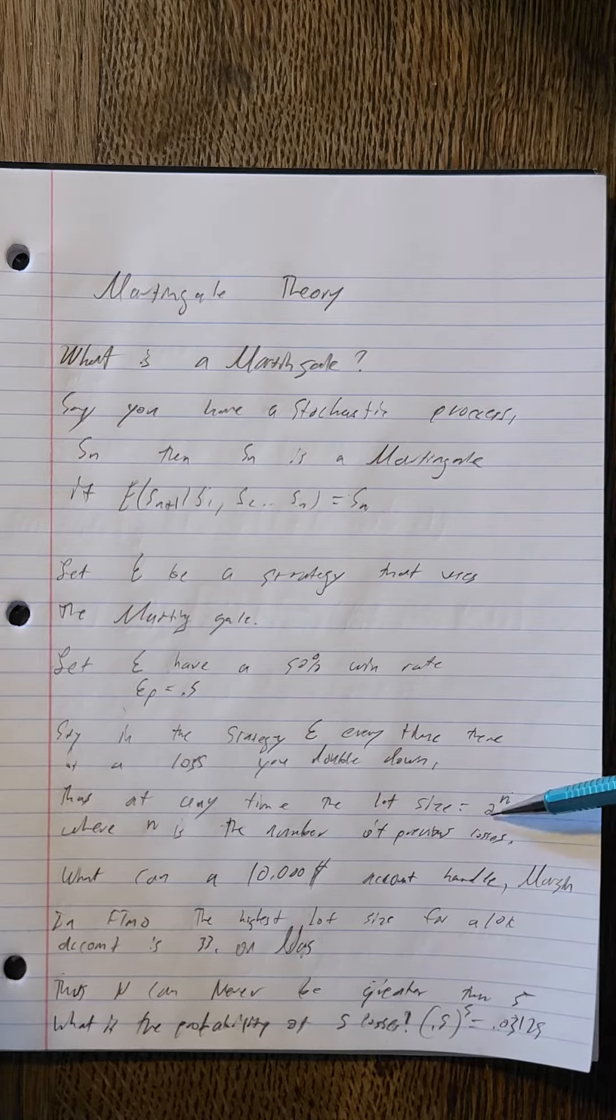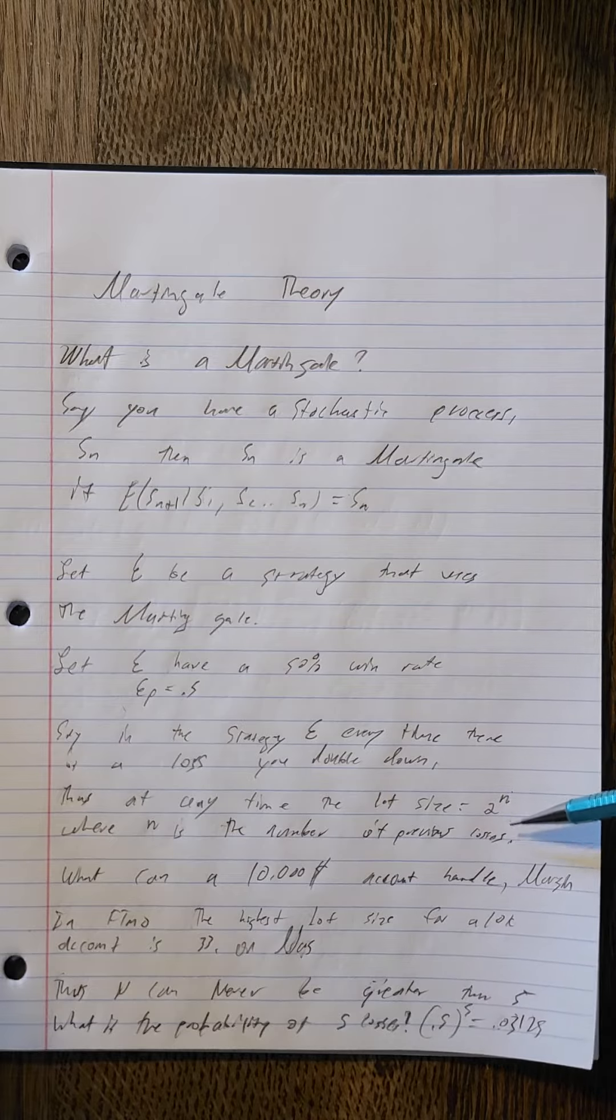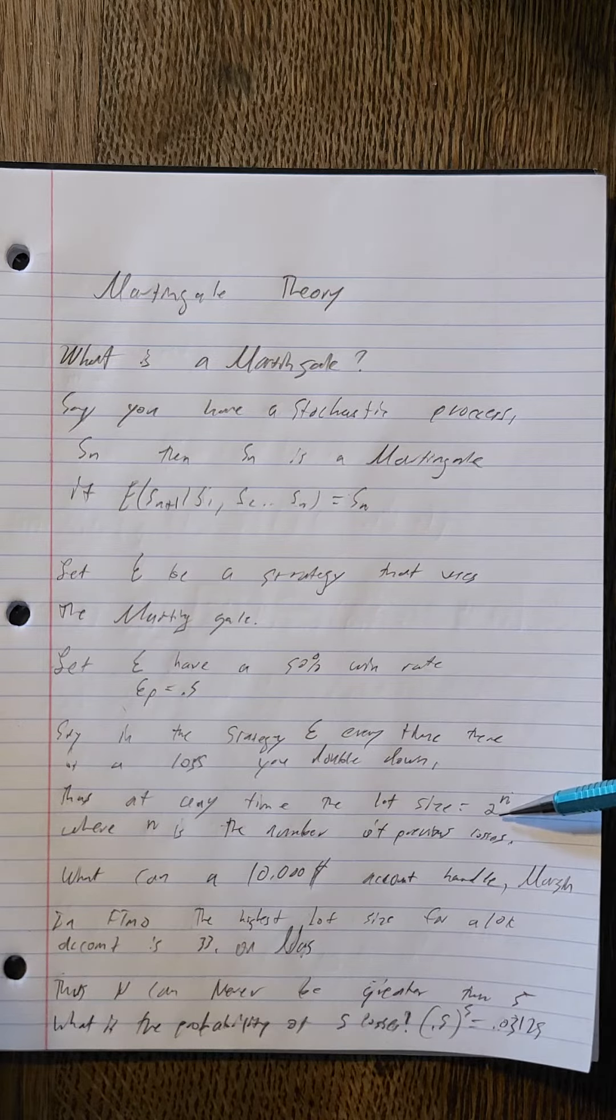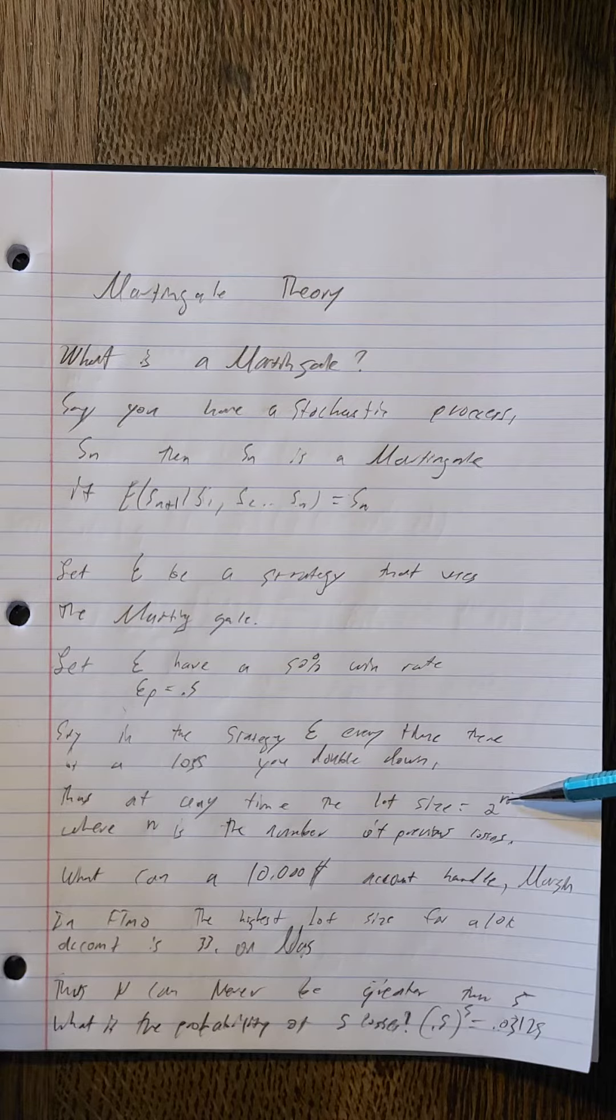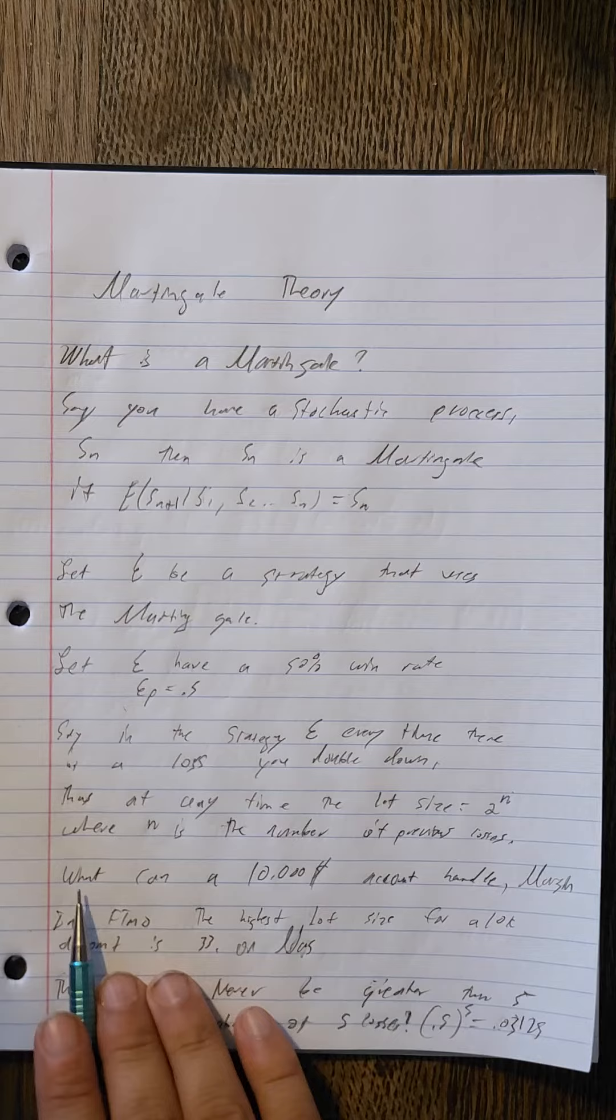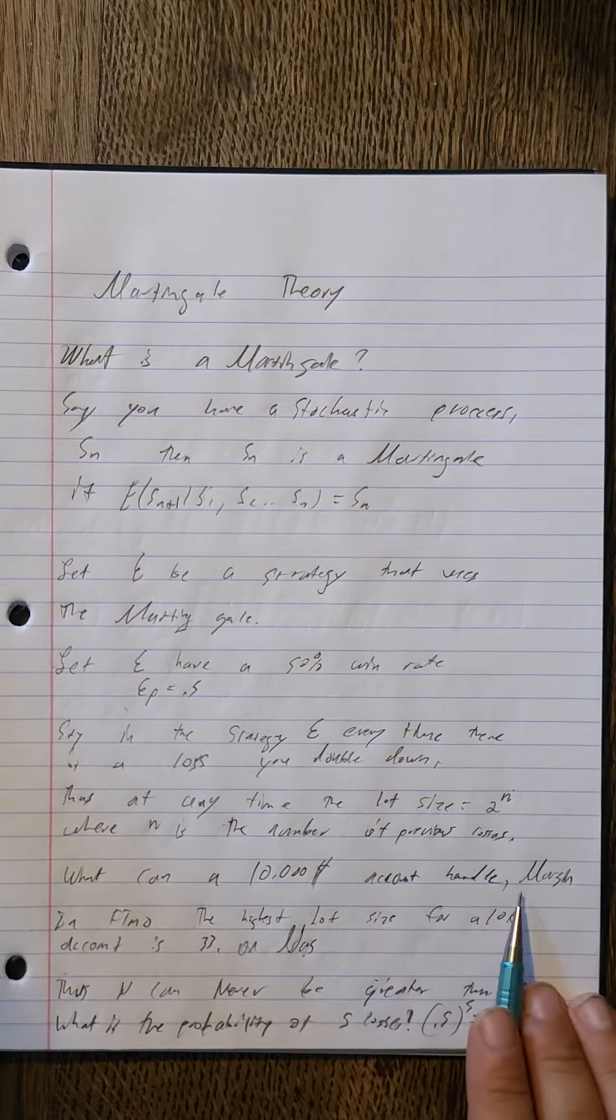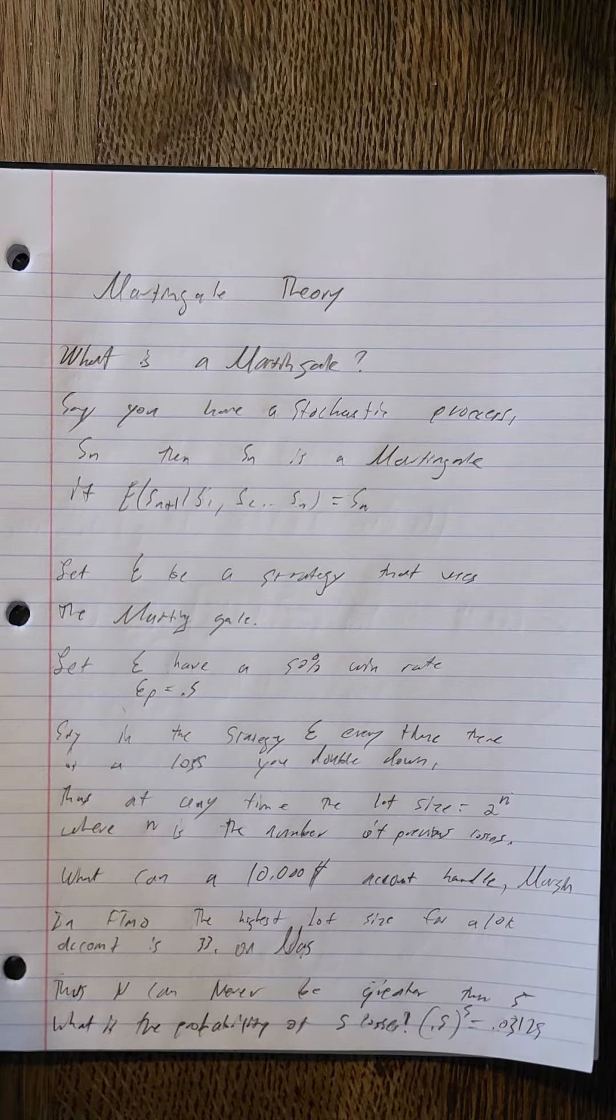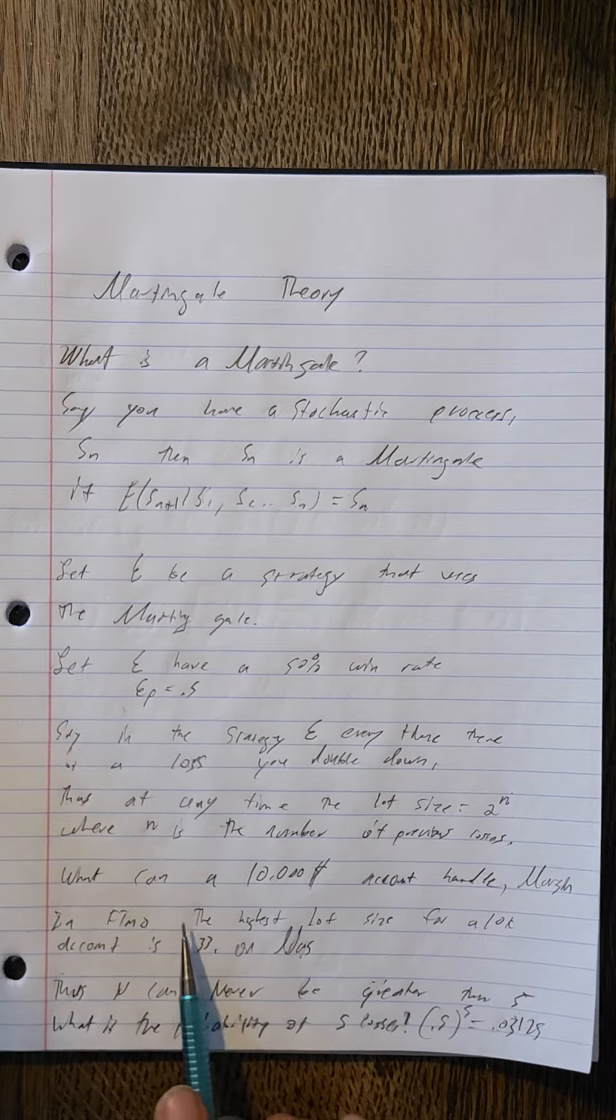So say for example you have three previous losses and n equals three. Say for example you have no previous losses, then n equals zero. The question becomes what can a ten thousand dollar account handle in an FTMO account?